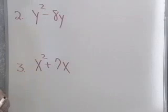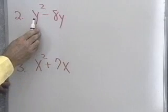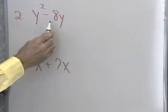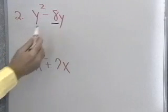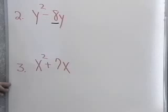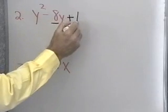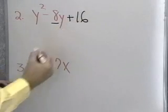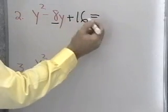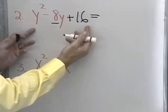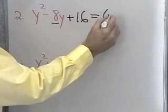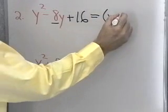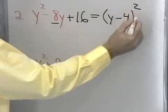Let's try it on the next problem: y squared minus 8y. I go to the coefficient of the middle term — it's 8. I take half of that, which is 4. Square it, and I get 16. So if I add 16 on here, I know I've got a perfect square trinomial, which factors into y minus 4, quantity squared.